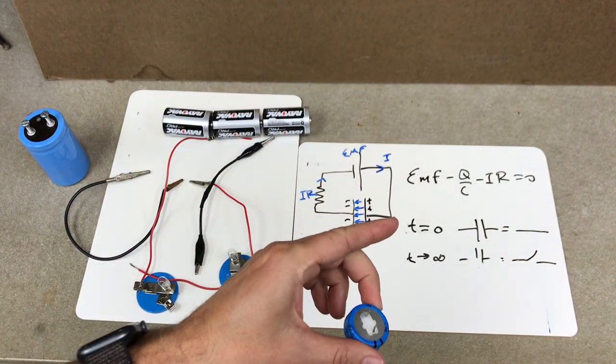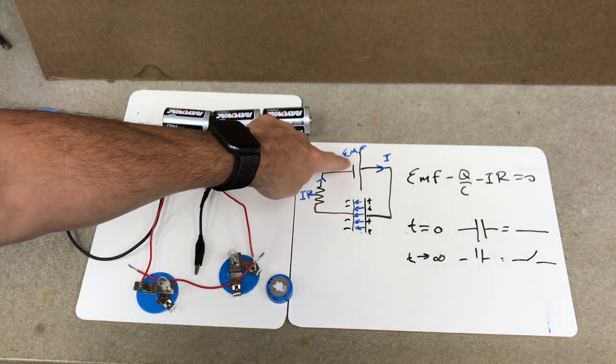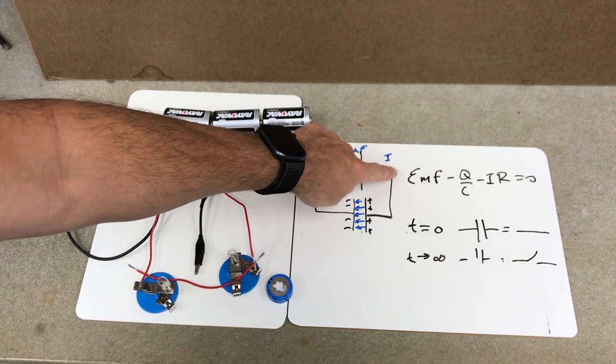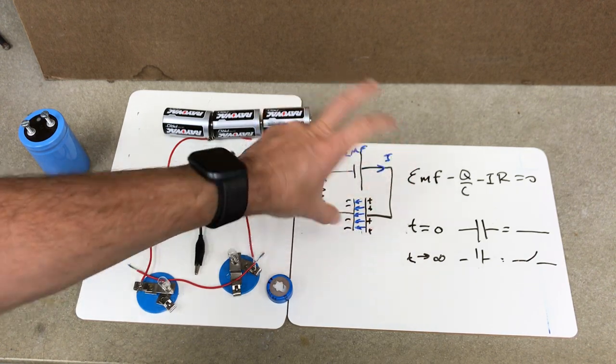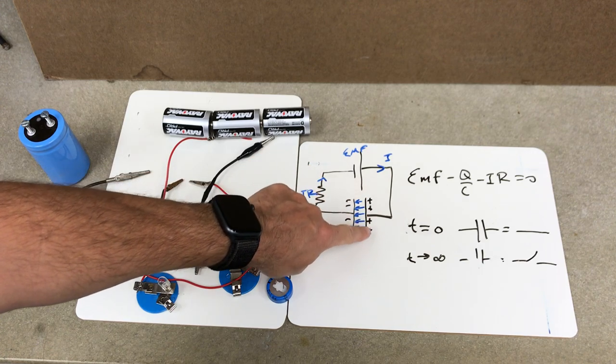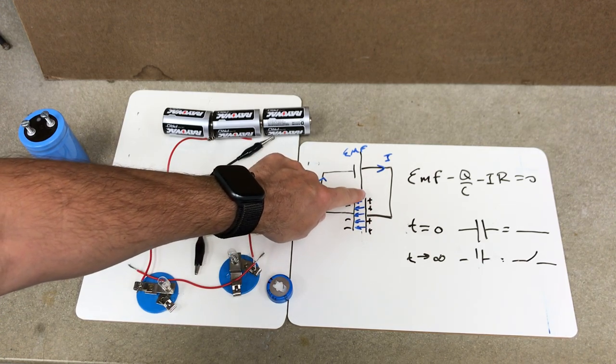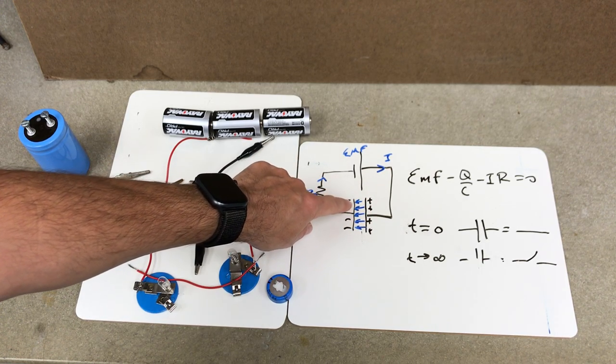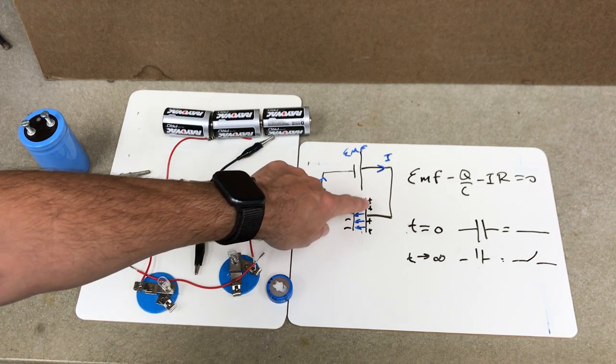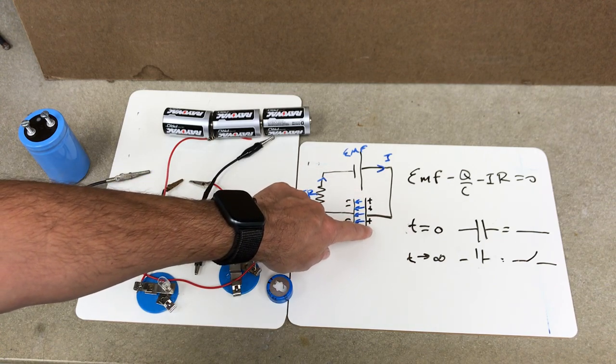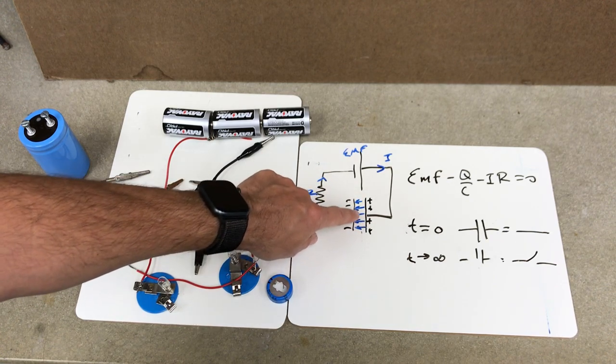So what if you hook up a capacitor to battery? So here I have a battery. Current comes out and as it gets to this parallel plate, the positive charge is built up on this plate, and that creates an electric field that actually pushes charges off that plate. So you get negative charges over here. As the charge is built up on each side of the plate, you get an electric field in there.